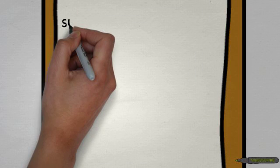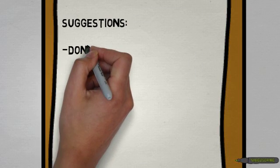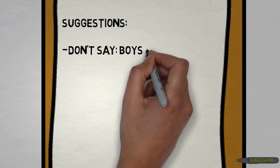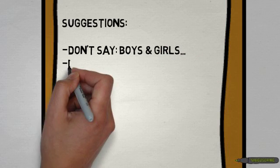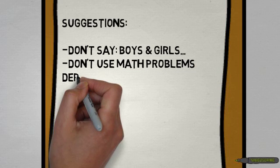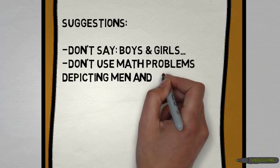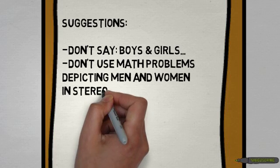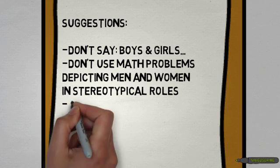For example, try not to call your class back in order by saying, 'Hey, boys and girls, listen up.' This just emphasizes the separation between the girls in the room and the boys in the room. Don't use math problems that ask students to calculate how many dishes a woman washed or how fast a man was racing a car down the track.